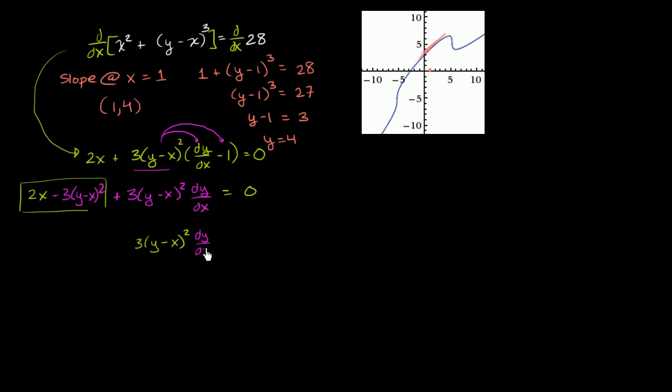The derivative of y with respect to x is equal to, I'm just going to subtract this from both sides, is equal to negative 2x plus this. So I could write it as 3 times (y - x) squared minus 2x. So we're adding this to both sides and we're subtracting this from both sides, minus 2x. And then to solve for dy/dx,